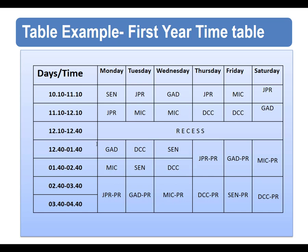Let us consider the example of a first year timetable. In this example for the rowspan attribute, you can see that the JPR practical on Monday has a timing from 2:40 to 4:40. Here the value of the rowspan attribute is 2, which indicates that the table row stretches down across two different rows. The same applies to all other practical slots from Tuesday to Saturday.